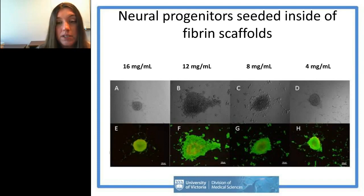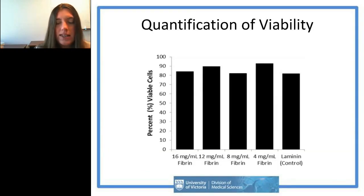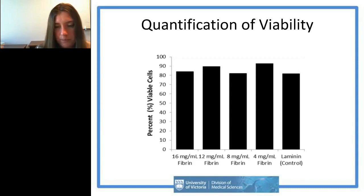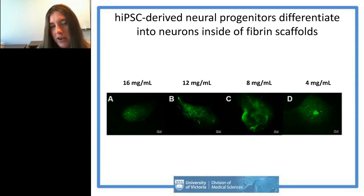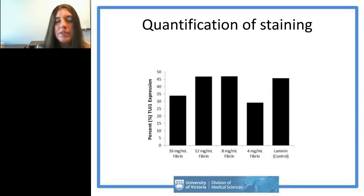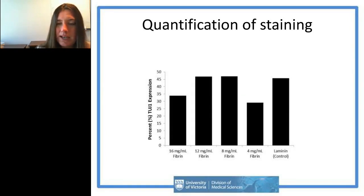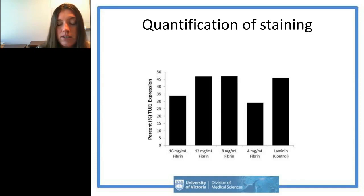We did neuronal staining and some quantification, and preliminary data suggests somewhere between 8 mg/mL and 12 mg/mL fibrin really promotes more neuronal differentiation — similar levels to laminin controls — compared to the lowest and highest gel concentrations. Interestingly, when we tried seeding more mature neural rosettes rather than neural aggregates into fibrin scaffolds, the cells remained viable but didn't really infiltrate the gel, preferring to remain as an aggregate — quite interesting to observe.